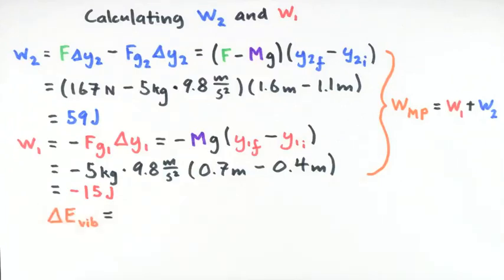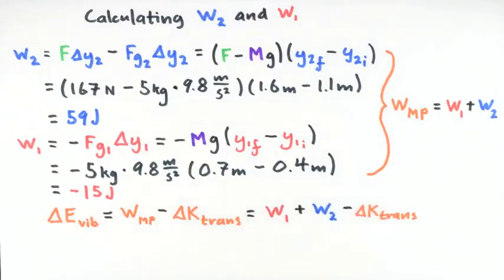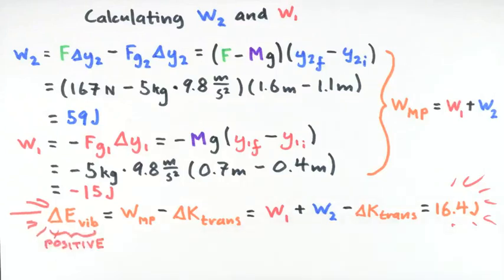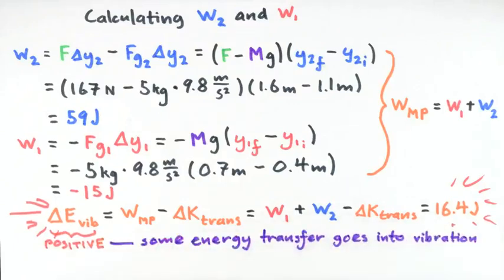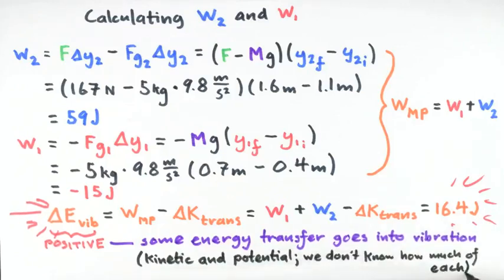We can now insert this into the energy principle and solve for our last unknown — the change in vibrational energy. To do this, we insert the numerical values and include the result for the change in translational kinetic energy that we found earlier. We notice that the change in vibrational energy is positive. In this case, there is net energy transfer from the surroundings to the system, and some of that transferred energy shows up as an increase in vibrational energy. As a final note, we don't know how much of the vibrational energy is kinetic and how much is spring potential energy; we would need more information not provided in this problem to determine that.